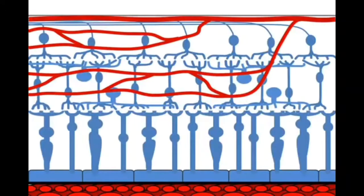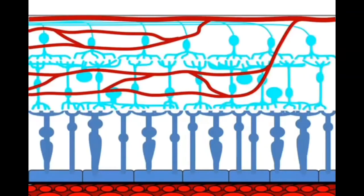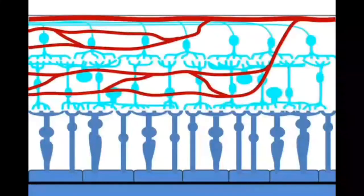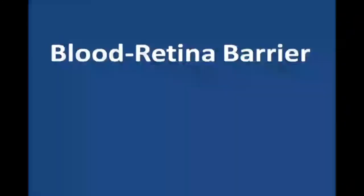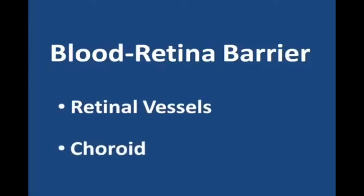The retinal vessels bring oxygenated blood down to the top two layers of retinal nerve cells, while the choroid takes care of the lowest layer of nerve cells. A unique feature of the blood supply of the retina is what is called the blood-retinal barrier. The blood-retinal barrier is a system of protective features that keeps blood-borne substances from upsetting the controlled, stable environment required for the proper functioning of the retinal neurons. These protective features are built around the two pathways of blood supply to the retina — the retinal vessels and the choroid. The protective features associated with the retinal blood vessels are referred to as the inner blood-retinal barrier.